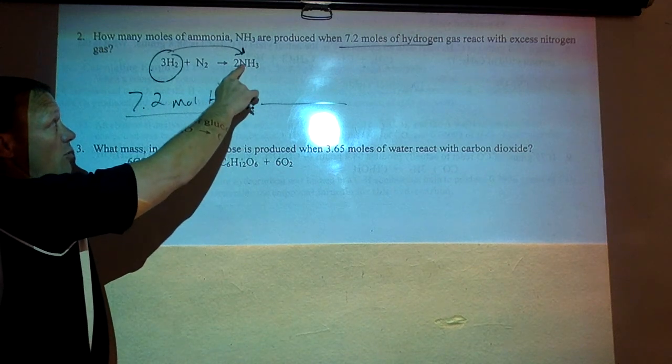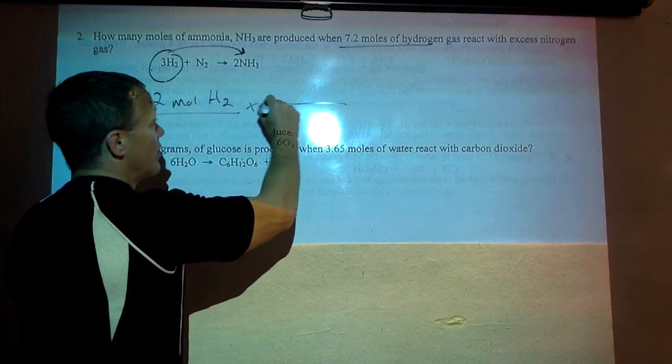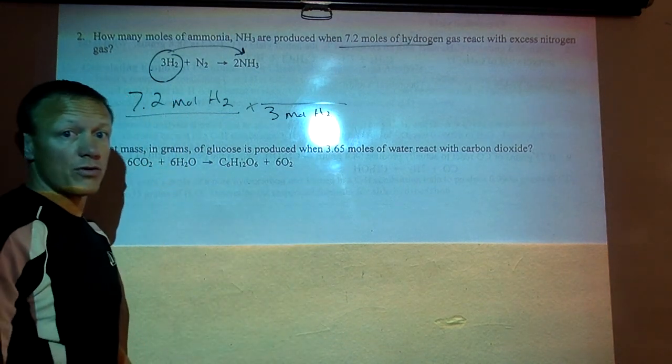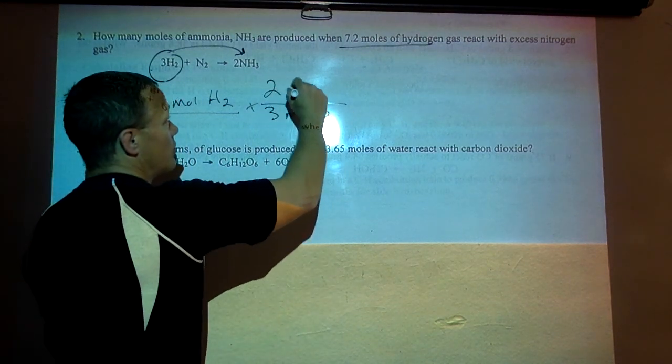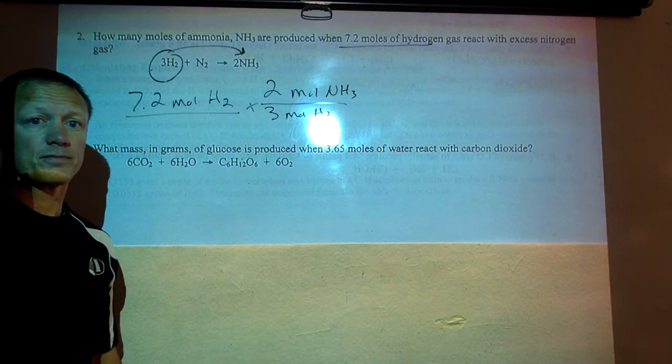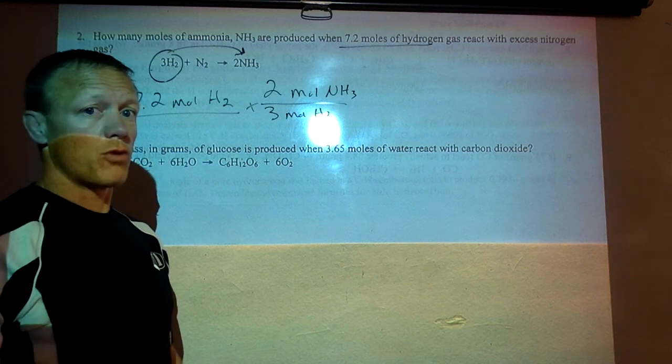This one's obviously smaller moles so our answer should be less than 7.2. So for every three moles of H2 that are used in the reaction there's two moles of NH3 that are produced. Okay so this is just a mole to mole problem.